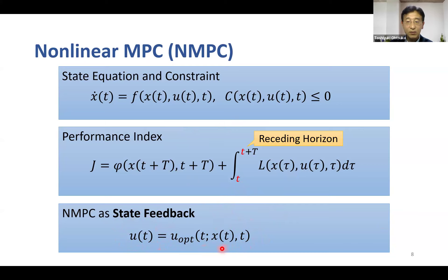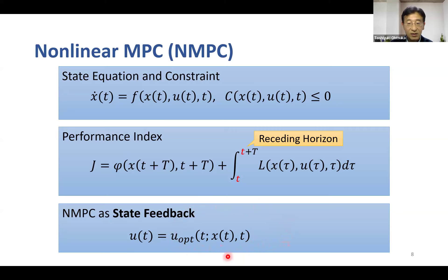We cannot find this state feedback explicitly as a function of x and t in general. Instead, we compute the input numerically and the numerical solution depends on the current state. It is computationally demanding to solve nonlinear optimal control problems numerically, and implementation of NMPC is challenging for fast and complex nonlinear systems.